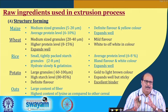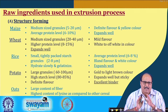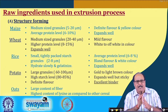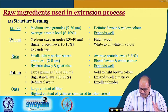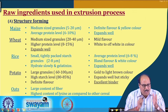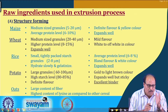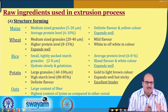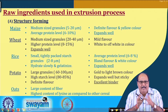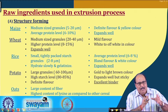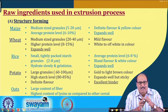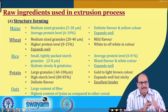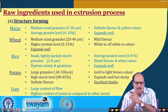There are different types of raw materials used in the extrusion process and they have different functions in shaping the product characteristics. Certain ingredients are used as structure-forming materials, like maize, wheat, rice, potato, oats, etcetera. Depending upon the size of the granules, the type and amount of starch, protein and lipid systems present, these materials give different characteristics to the extruded product.